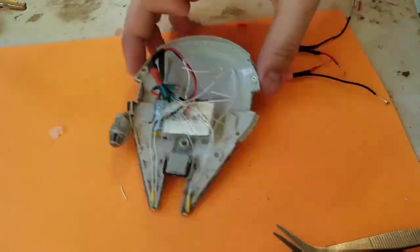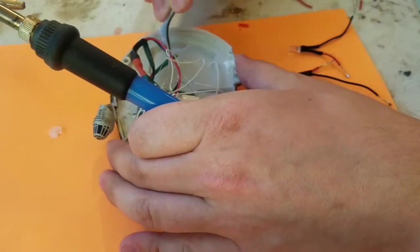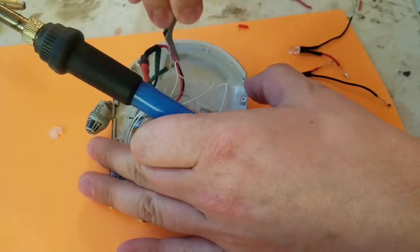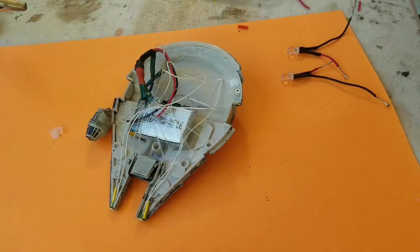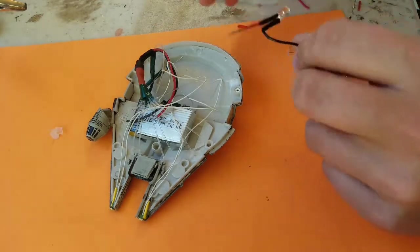Now we have to start putting all of the electronics inside of the ship itself. I've already soldered on the first resistor to the battery itself and now I'm going to be soldering on the first blue LED for the engine.